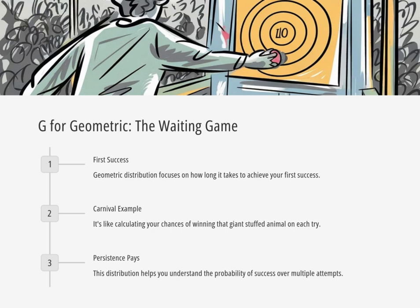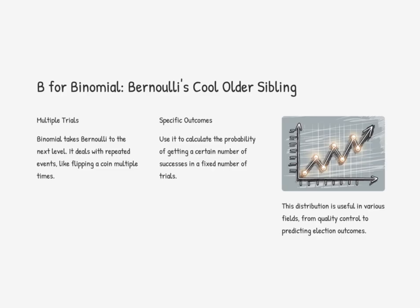What about the second B — binomial? Think of binomial like Bernoulli's cooler, older sibling. Instead of one coin flip, we're talking about multiple flips — like flipping a coin 10 times. Binomial tells you the probability of getting a specific number of heads or tails within those 10 flips. So if I wanted to know the odds of getting exactly 7 heads out of 10 flips, binomial's got you covered. It's all about those multiple trials.